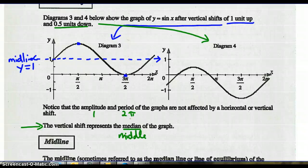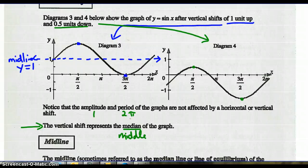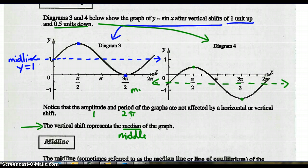For the midline of the second graph: the lowest point is negative 1.5, the highest point is positive 0.5. The range is 2 units — go down one or up one from the midpoint. Down one from 0.5 is negative 0.5, and up one from negative 1.5 is negative 0.5. So the midline of this graph has the equation y equals negative 0.5.